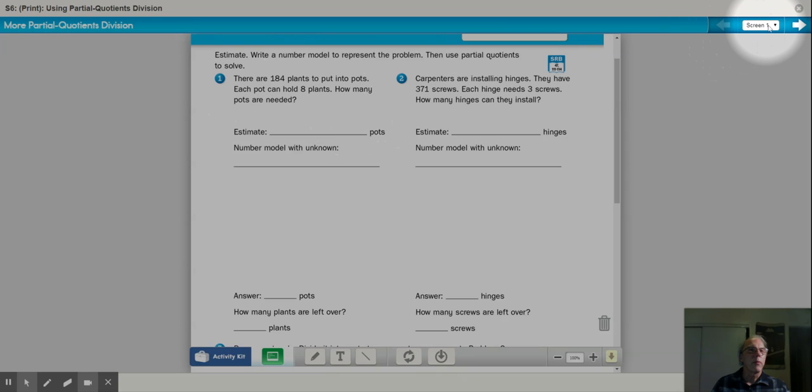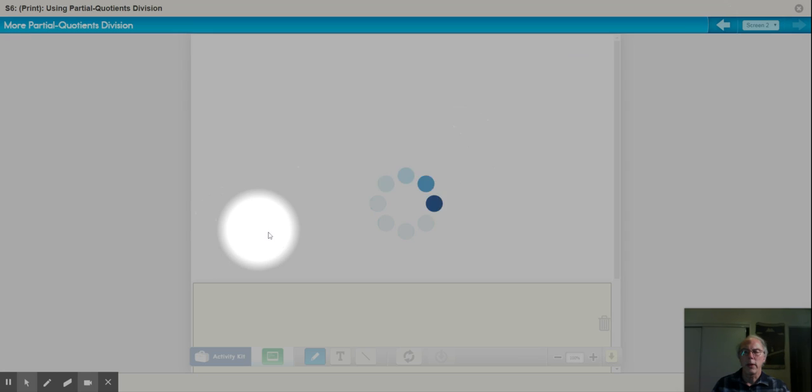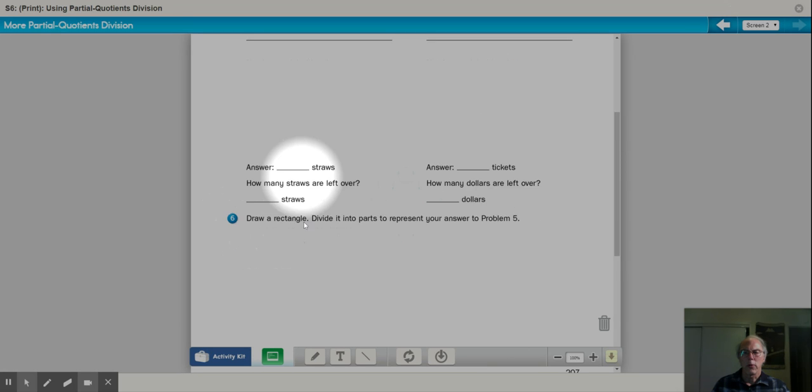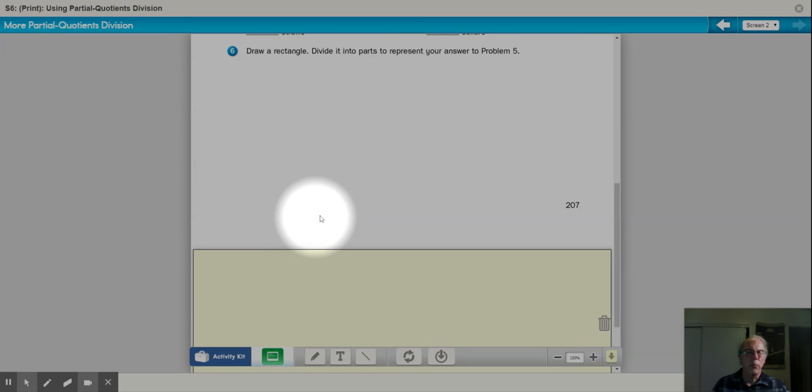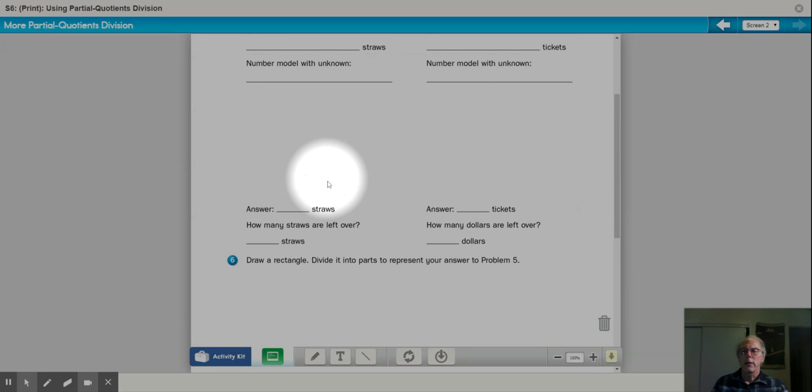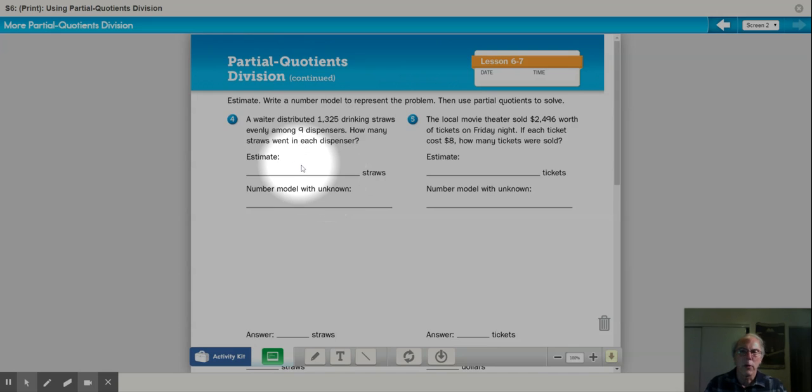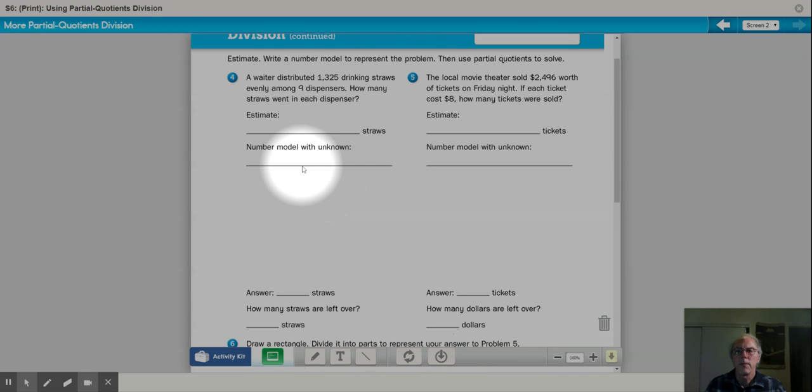However, for our sample examples, we'll use screen number 2 which is the next page, page 207. So turn to page 207 in your math journal. Pause the video if you need to, pause it if you need to get online and then come back and watch this example to see how you do it.